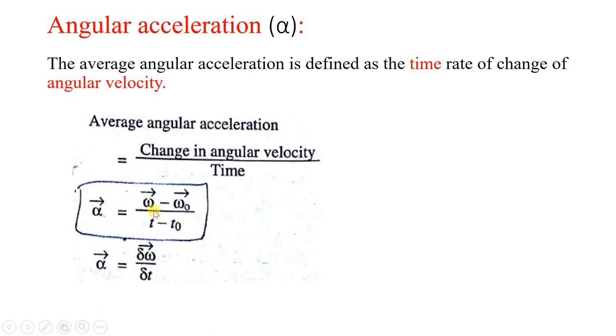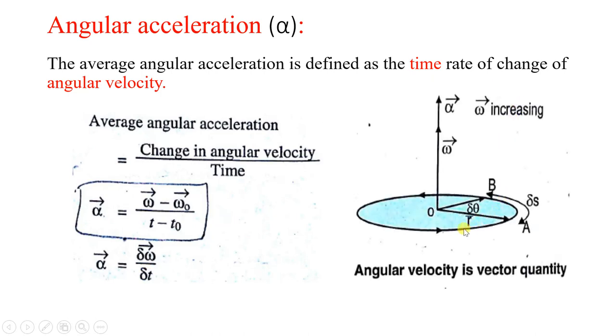Angular acceleration will be the change in angular velocity with respect to time. So here omega final velocity minus initial velocity divided by final time minus initial time, and finally we will get alpha is change in angular velocity with respect to time.